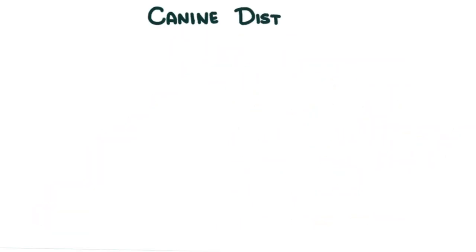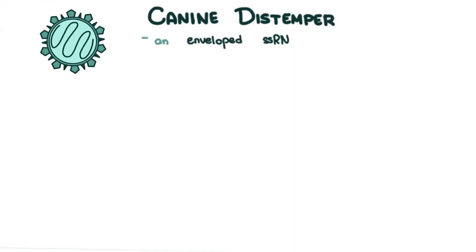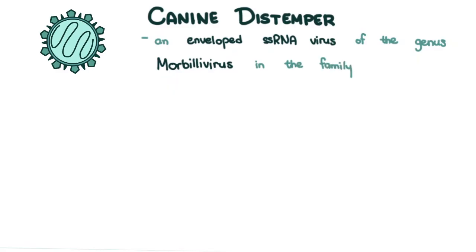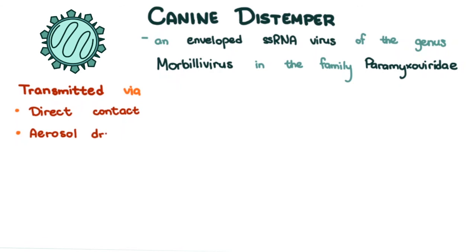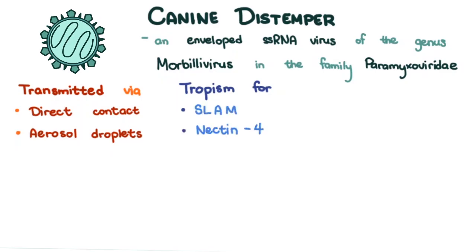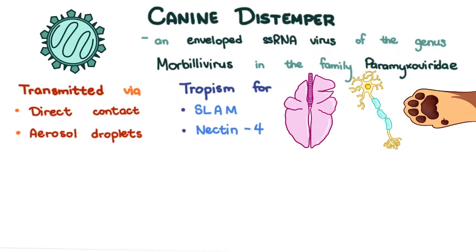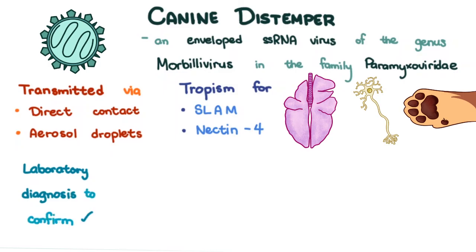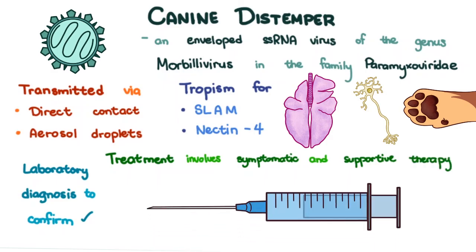To summarize, canine distemper virus is an enveloped, single-stranded RNA virus of the genus Morbillivirus in the family Paramyxoviridae. It is transmitted via direct contact and aerosol droplets. The virus has tropism for cells with the signaling lymphocyte activation molecule and Nectin-4 receptors, with clinical signs being a consequence of infection of these cells. Laboratory diagnosis is needed to confirm, treatment involves symptomatic and supportive therapy, and vaccination is given starting at 6 weeks of age at regular intervals until 16 weeks, with annual revaccination.